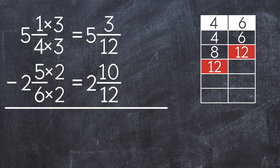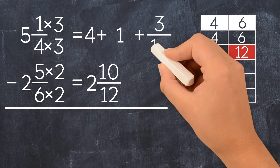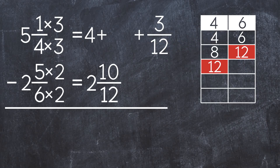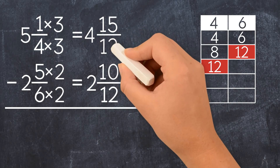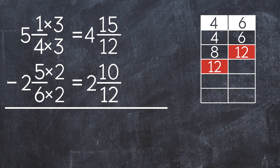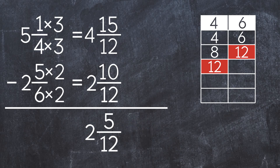We can't subtract 10 twelfths from 3 twelfths, because 3 twelfths is smaller than 10 twelfths. So we have to rename the first mixed number. We rewrite it as 4 plus 1 plus 3 twelfths, and rewrite the 1 as 12 over 12. Now we add the whole number plus the two fractions to get 4 and 15 over 12. First we subtract the fractions to get 5 over 12. Next, 4 minus 2 equals 2. So the final answer is 2 and 5 twelfths.